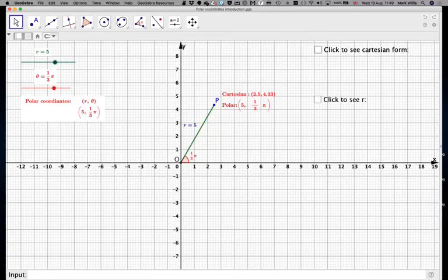When we first learn about coordinates, we learn about Cartesian coordinates. So the point P, for example, would be at 2.5, 4.33 at the moment. Now there's another way of writing coordinates which are called polar coordinates.